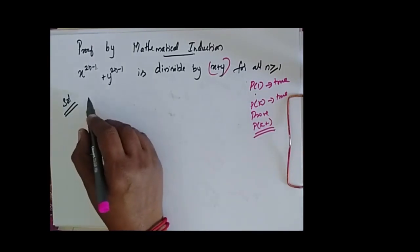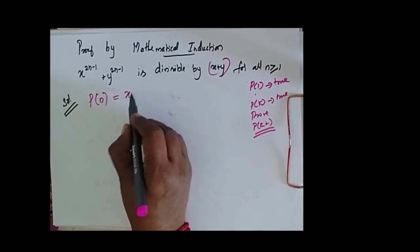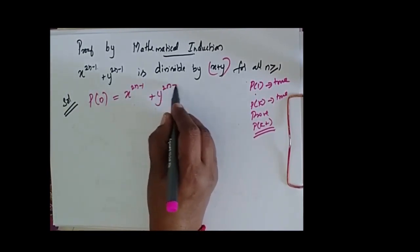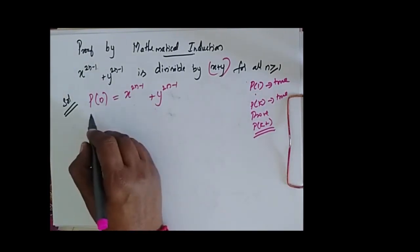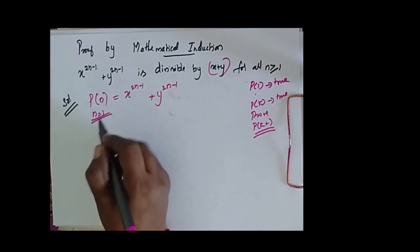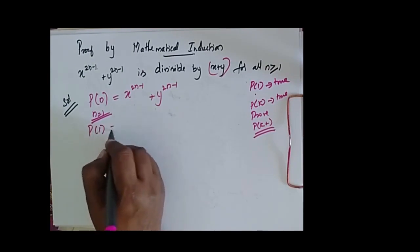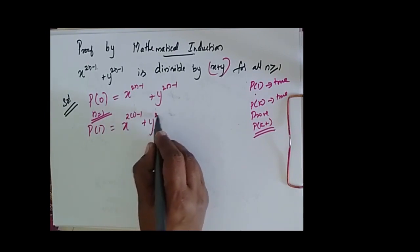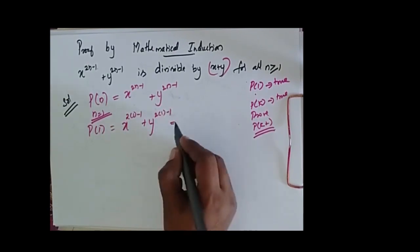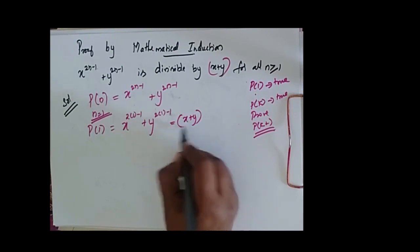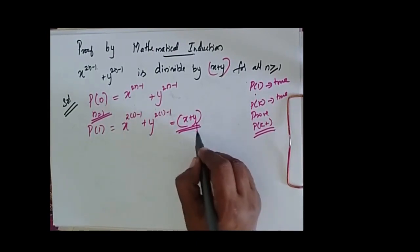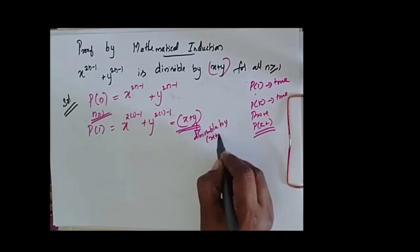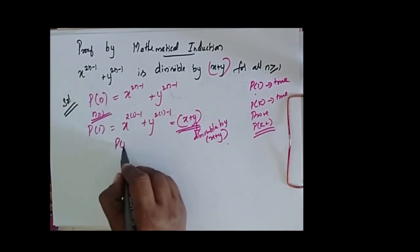Now going for the solution, I consider my P of n as x power 2n minus 1 plus y power 2n minus 1. Let me take my n as 1. So my P of 1 is equal to x power 2 into 1 minus 1 plus y power 2 into 1 minus 1, which is equal to x plus y. So purely it is divisible by x plus y. So my P of 1 is true.